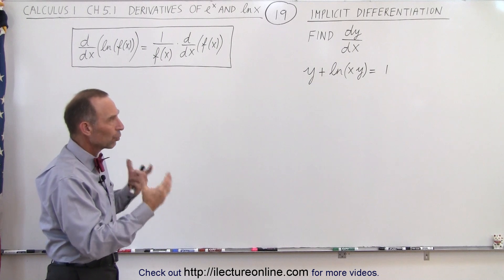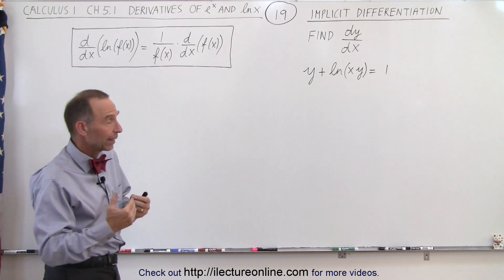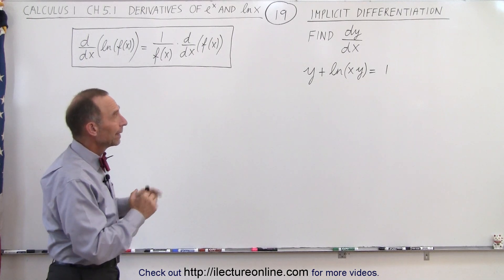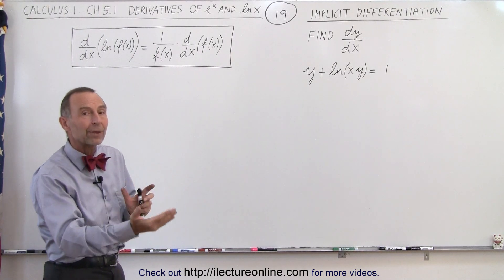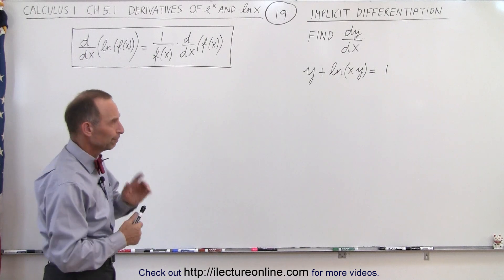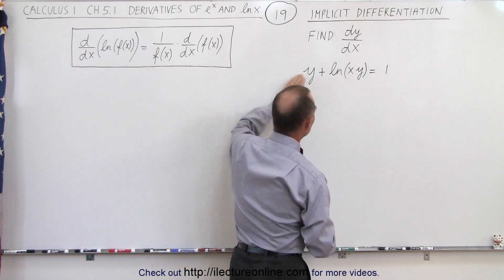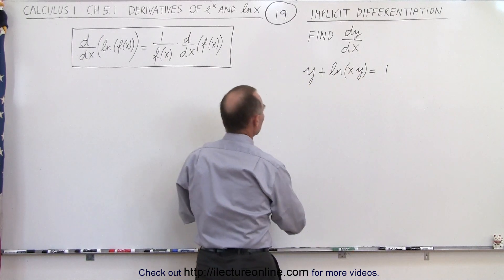Somehow by taking the derivative of both sides in terms of x, or with respect to x I should say, then we're going to find some dy/dx's in there and then we have to isolate those and solve for them. Let me show you how. So what we're going to do here is take the derivative with respect to x of both sides of the equation.